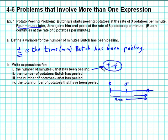Okay. The number of potatoes Butch has peeled. Well, the number of potatoes he's peeled depends on the rate at which he's been peeling them, which is three potatoes per minute. So if he peels three potatoes each minute, then however many minutes he's been peeling, for each minute he adds another three potatoes.